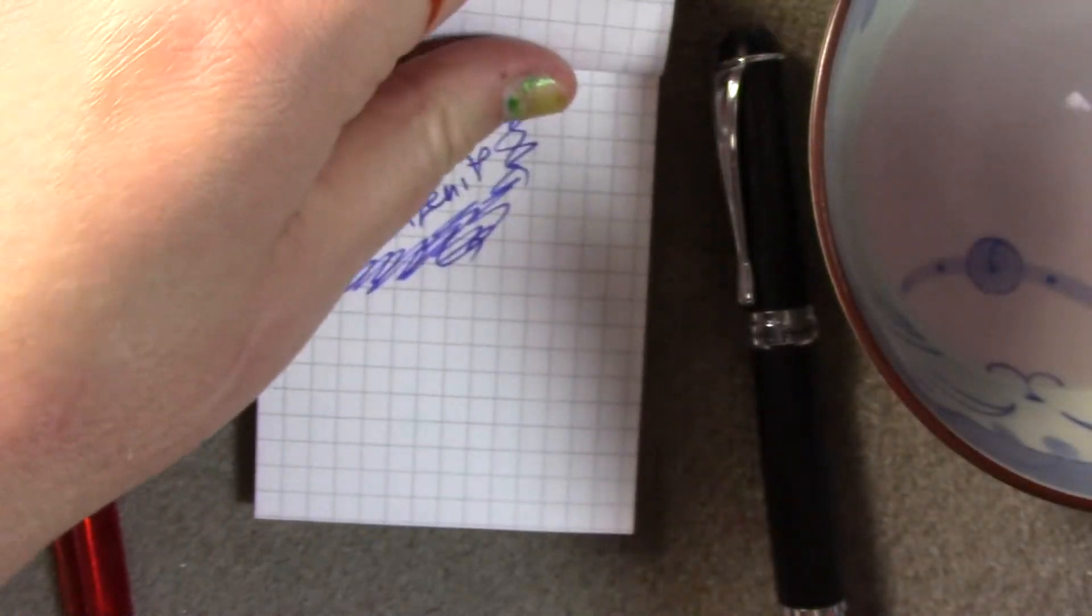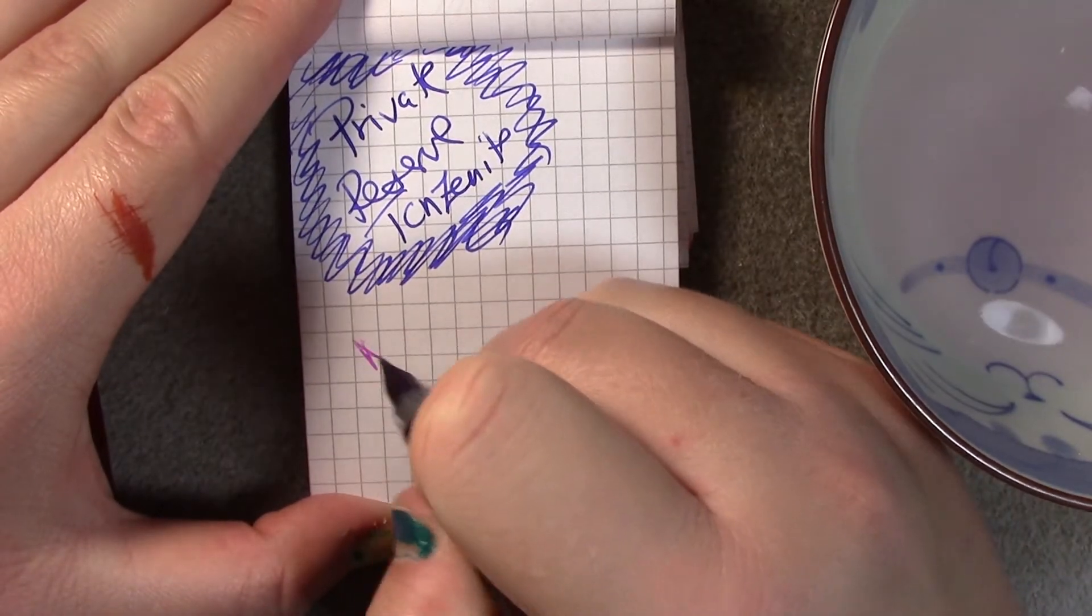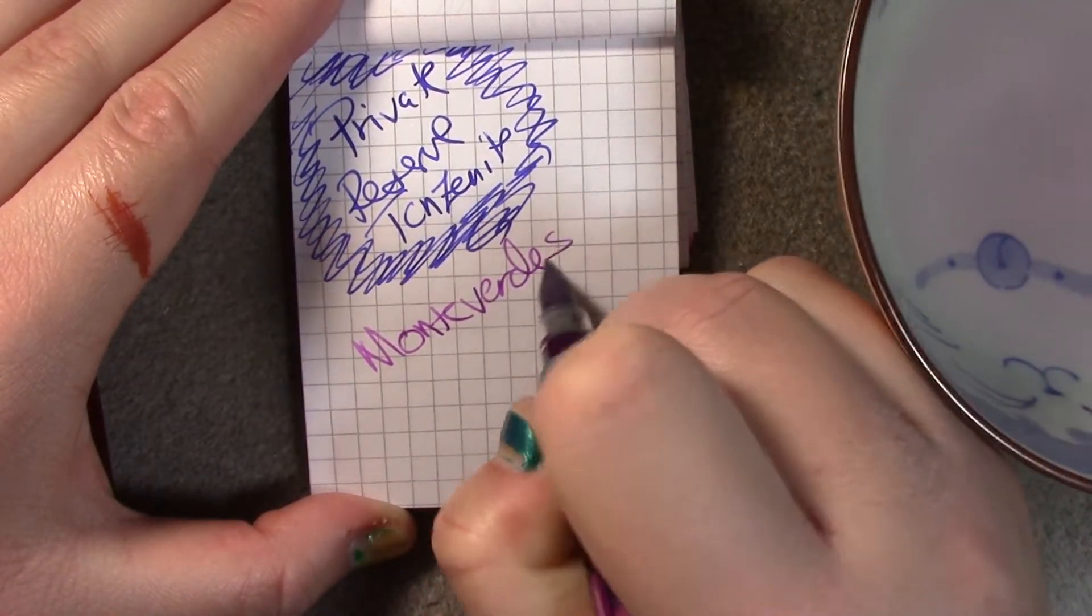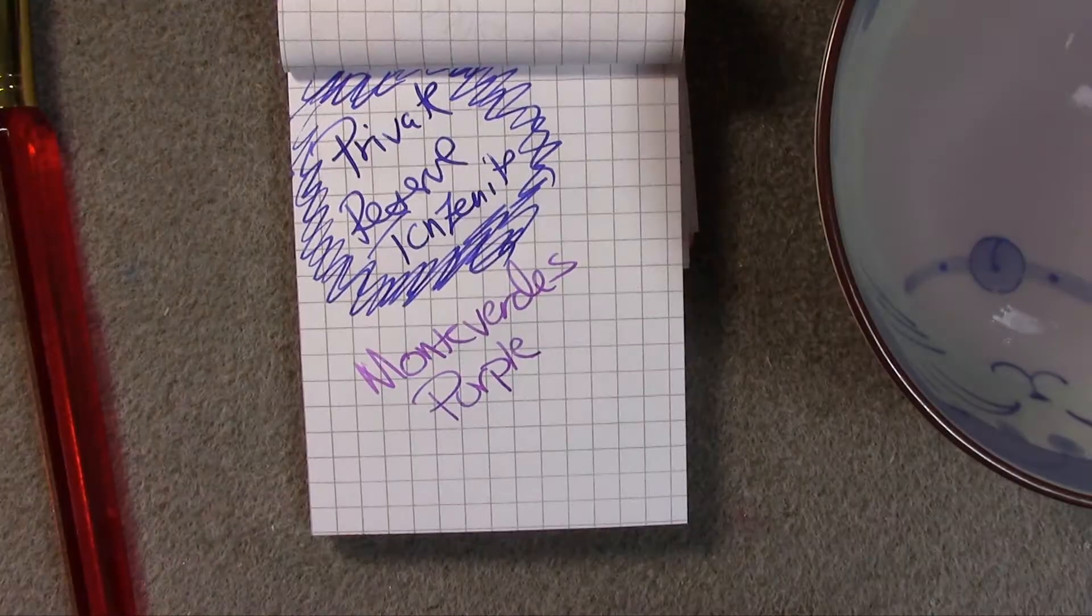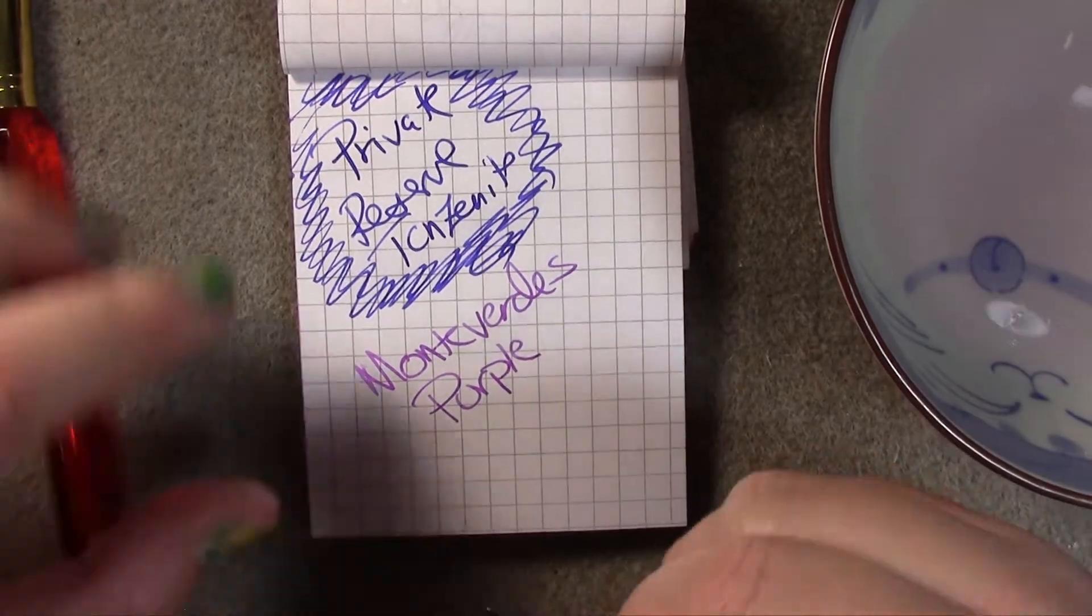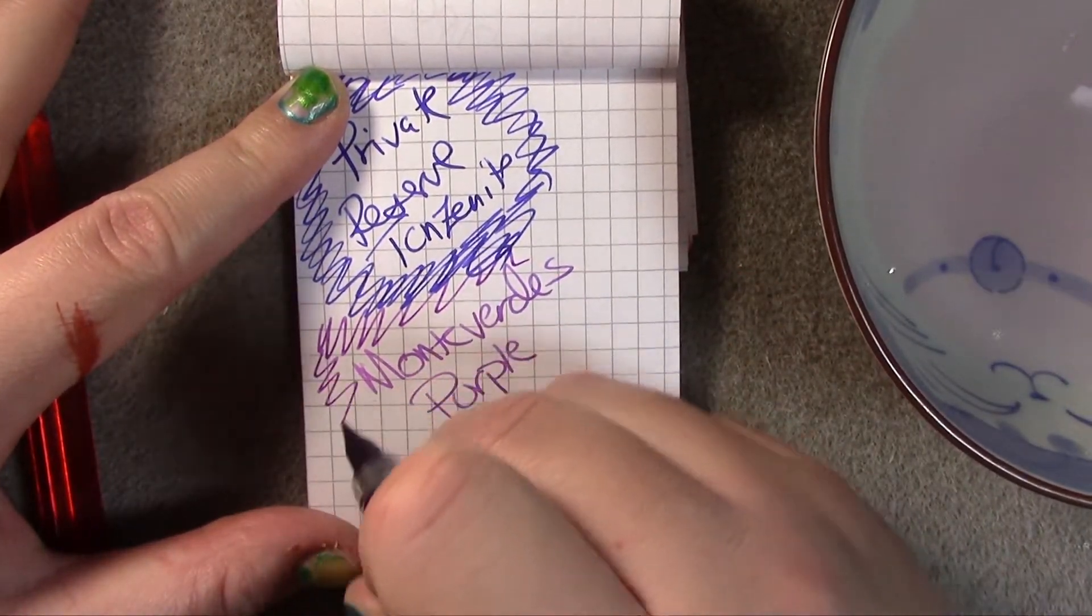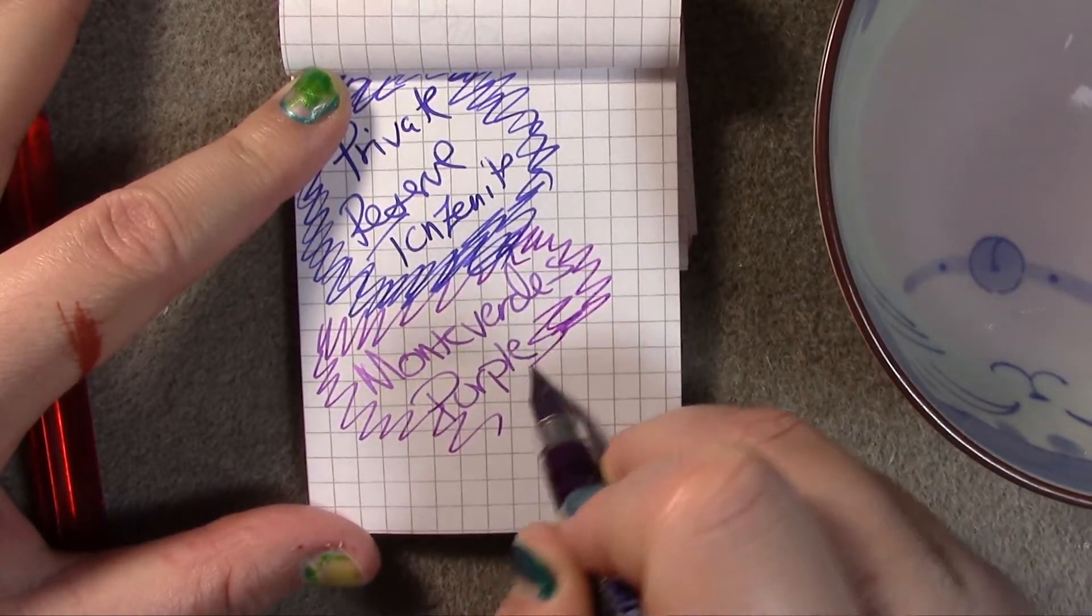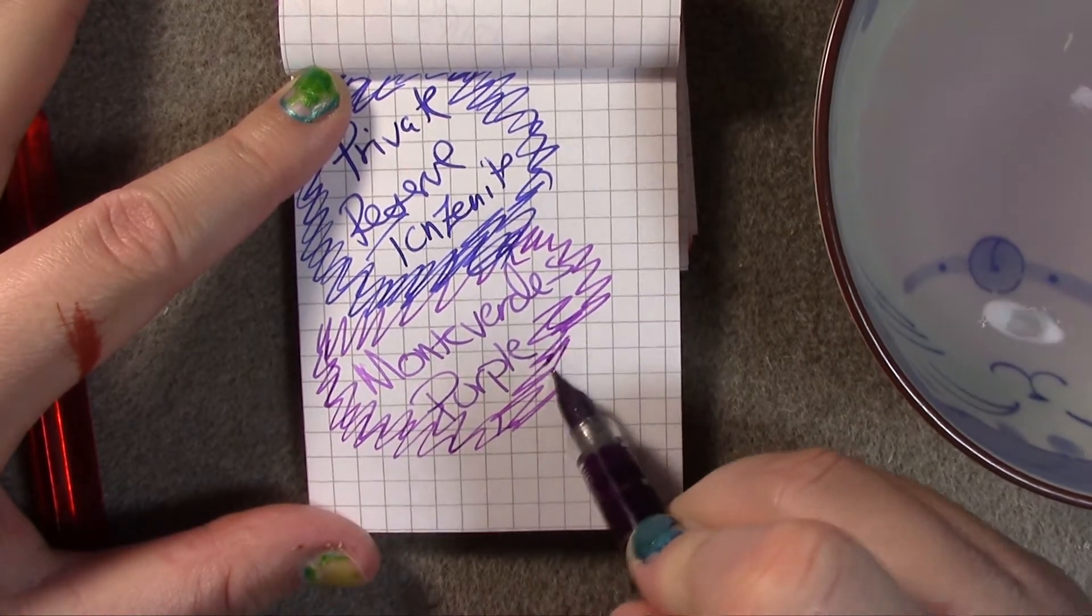Then, in a purple preppy, I have Monteverde's Purple, which is a very bright pink-toned purple. A lot of shading going on with this one, which is pretty cool. And I like this one, it's really pretty.